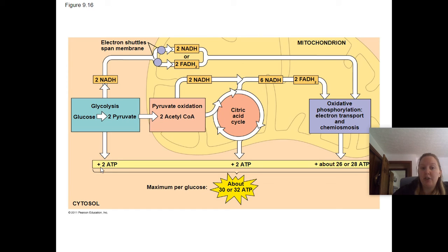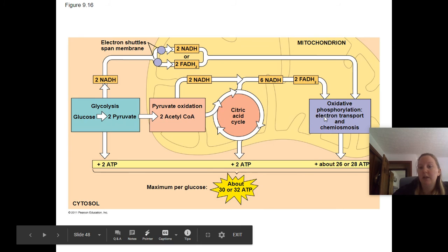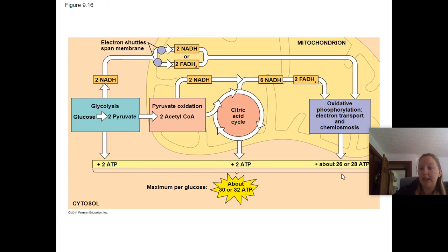At glycolysis you get two ATP; the citric acid cycle gives you two ATP; and oxidative phosphorylation produces anywhere from 26 to 28 ATP molecules.